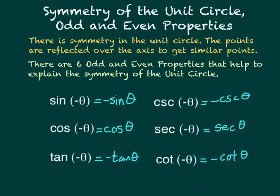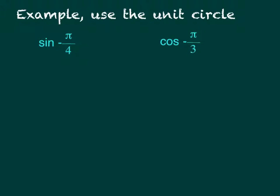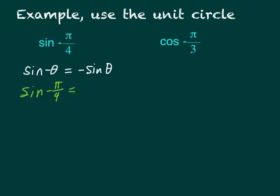We're going to use these properties to solve some problems. For our first example, we'll use the unit circle and our knowledge of odd and even properties. If we have sine of negative pi over 4, we need to remember that sine of negative theta equals negative sine of theta. So sine of negative pi over 4 is going to equal negative sine of pi over 4.